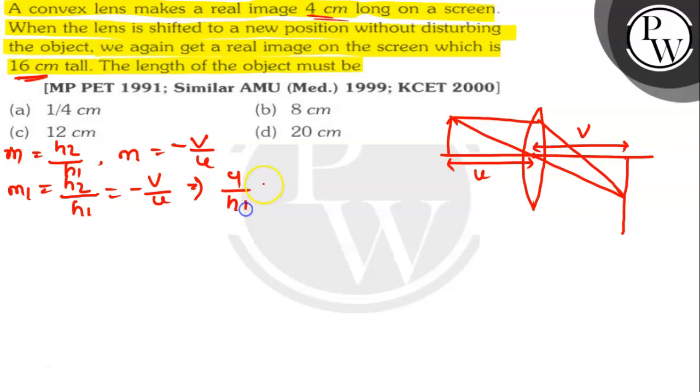So here, 4 by h1 equals minus v by u. This is equation 1. At the new position, let the lens be at object distance v and image distance u. This will also give a real image on the screen as the object and the screen both are not disturbed.